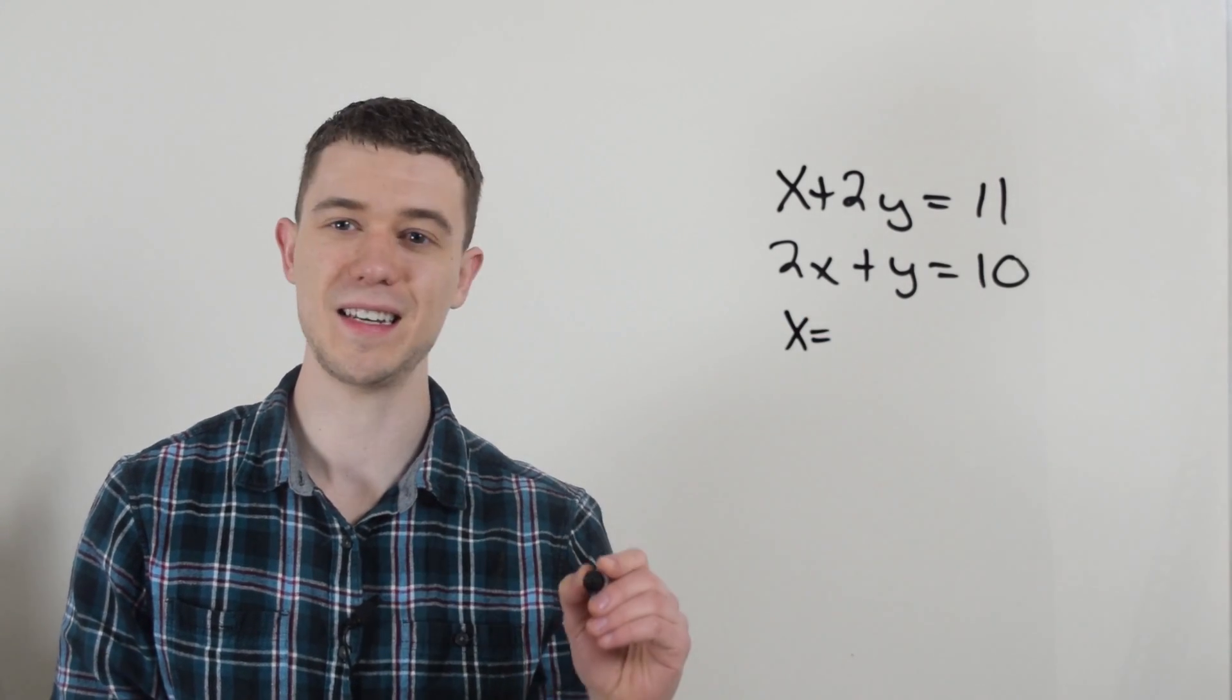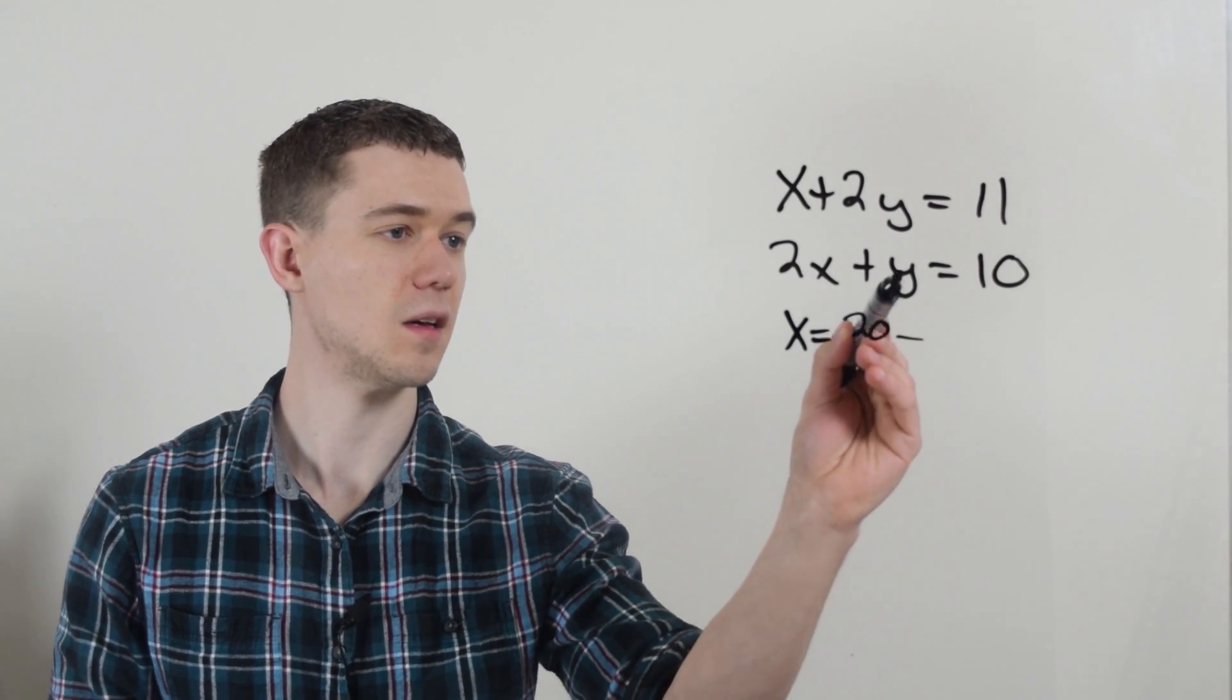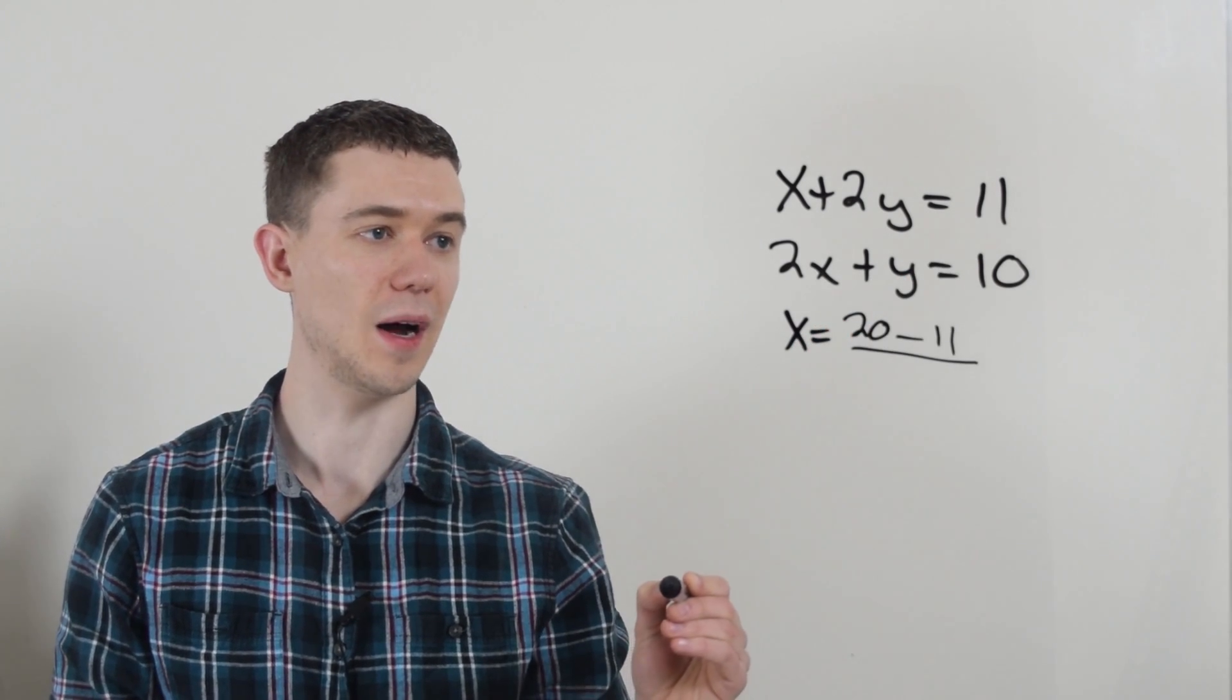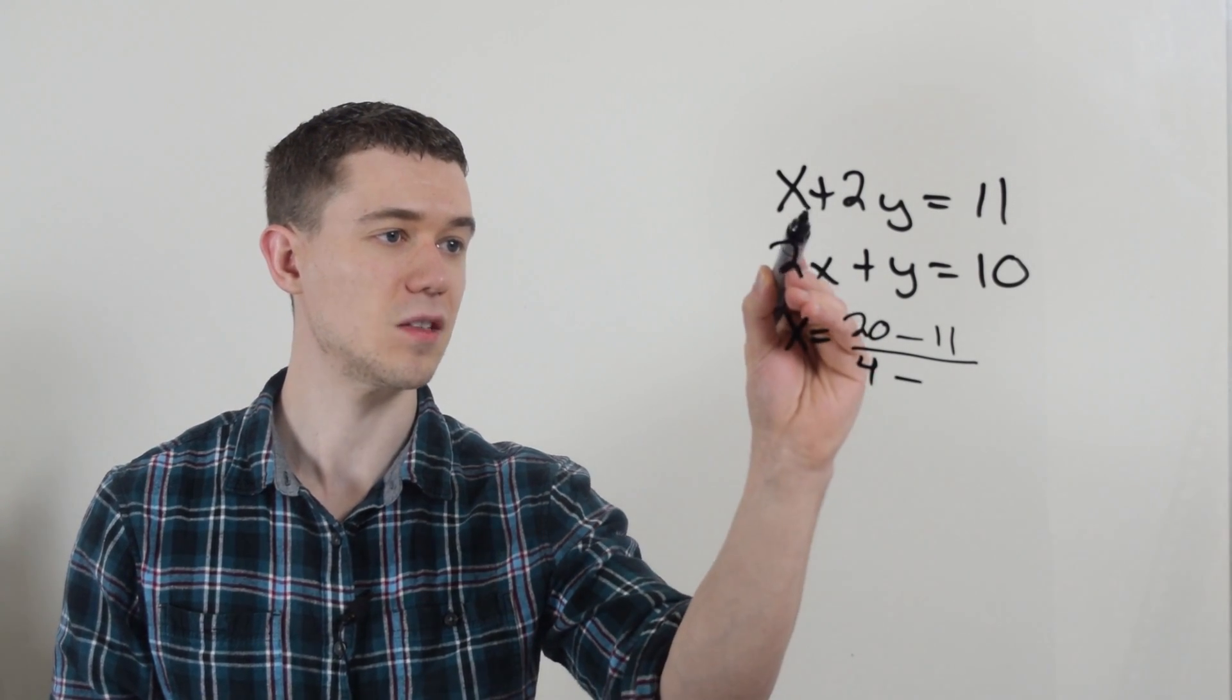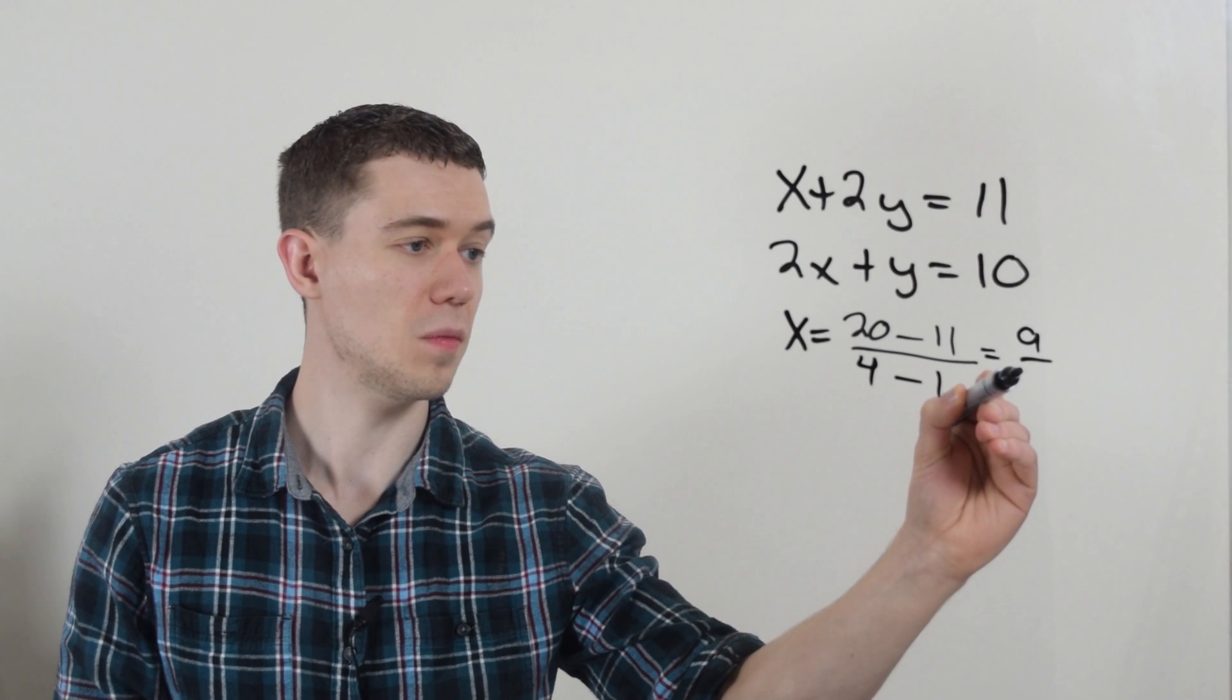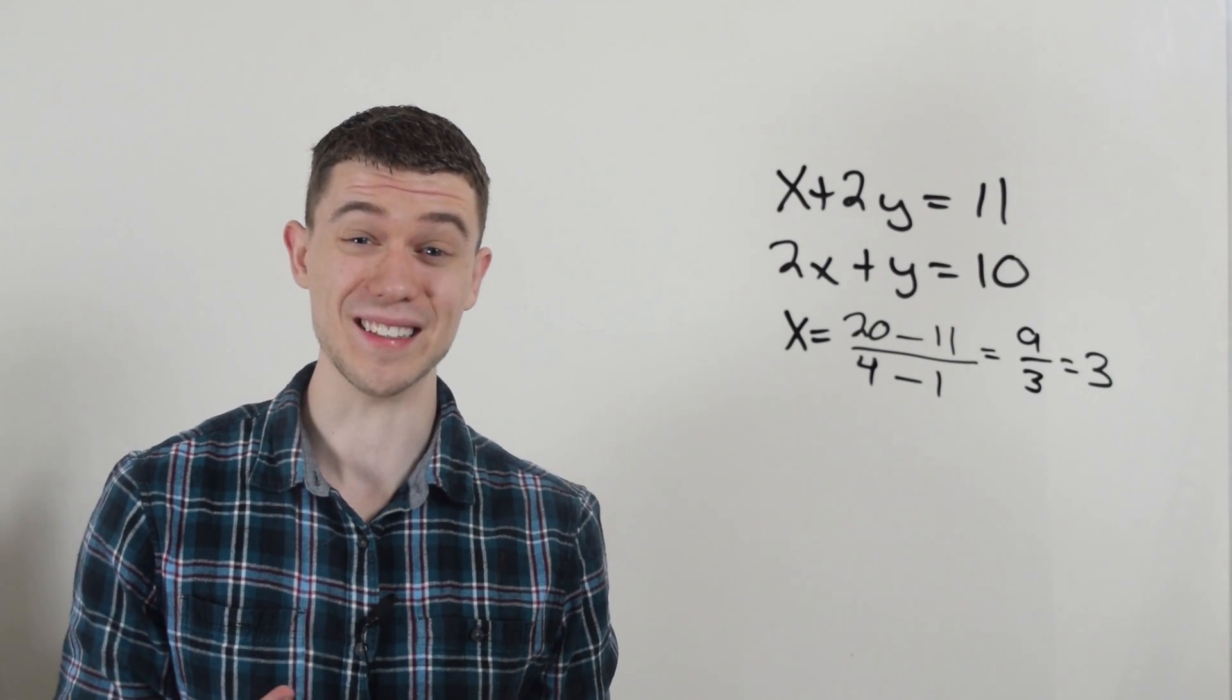I'm just going to write the answer. X is equal to, here's how it works, 2 times 10 is 20, minus, there's a 1 in front of this Y. 1 times 11 is 11, divided by 2 times 2 is 4, minus 1 times 1 is 1. That would be 20 minus 11 is 9, over 4 minus 1 is 3, 9 over 3 is 3. You just solved for X in like a few seconds. Wow.